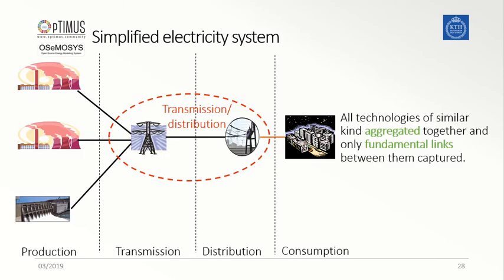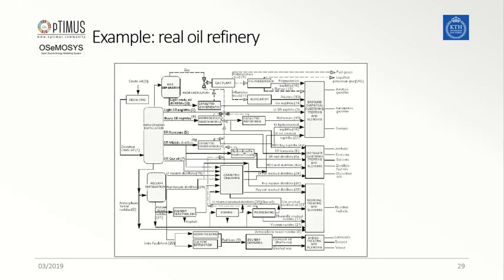For this reason, it is possible to simplify the system in such a way that all the technologies that are similar in terms of characteristics and services they provide are combined into one single technology that is the sum of all the different real equivalent ones. Similarly, through this approach, it is also possible to define, in the simplified system, only the fundamental links between the elements. The simplification can be done at different levels, and the way a technology is defined can be simplified to represent just the important characteristics sufficient to characterize how it operates and to capture its associated costs and interactions with the modeled system.